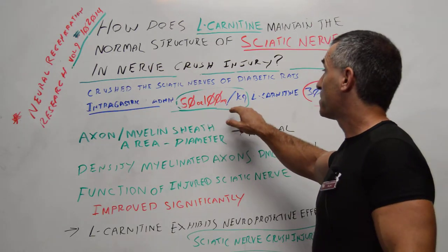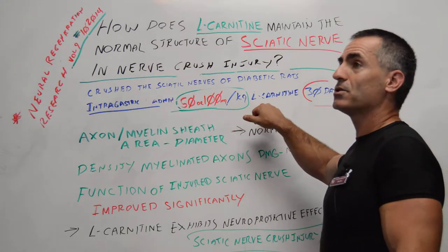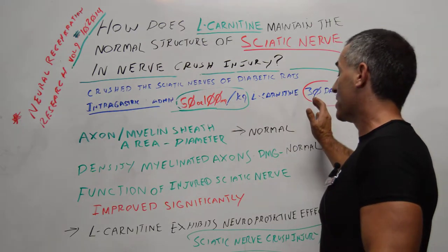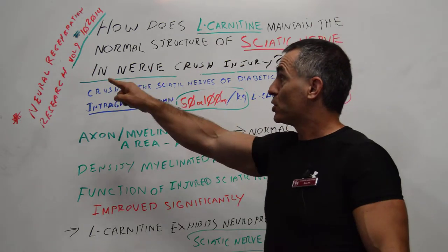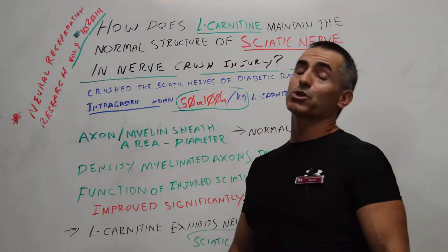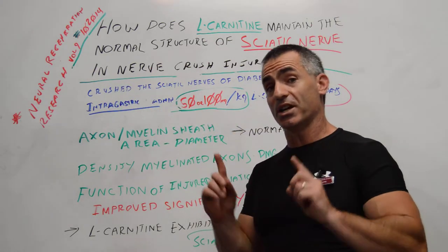50 to 100 milligrams per 2 pounds, about 3 and a quarter ounces of body weight. Again, published in Neural Regeneration Research Volume 9, Number 10, this July 2014.